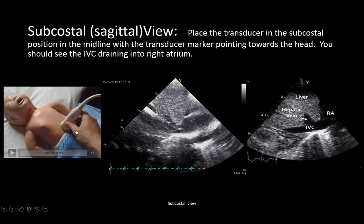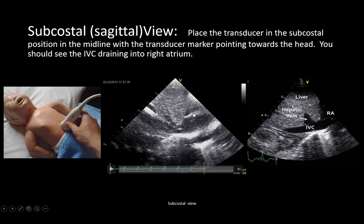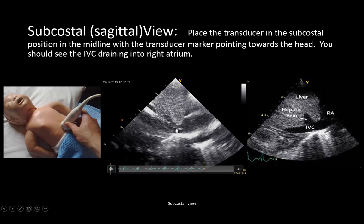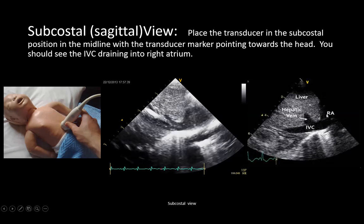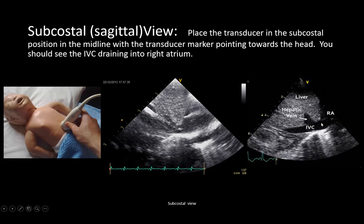For the subcostal view, the probe is placed at the subcostal area just below the xiphoid process with the probe marker facing the 12 o'clock position. You will see the liver on the right side and the heart — the entrance to the right atrium — on the left. The IVC is visible, and we aim to keep the catheter tip just outside the heart at the IVC–RA junction.